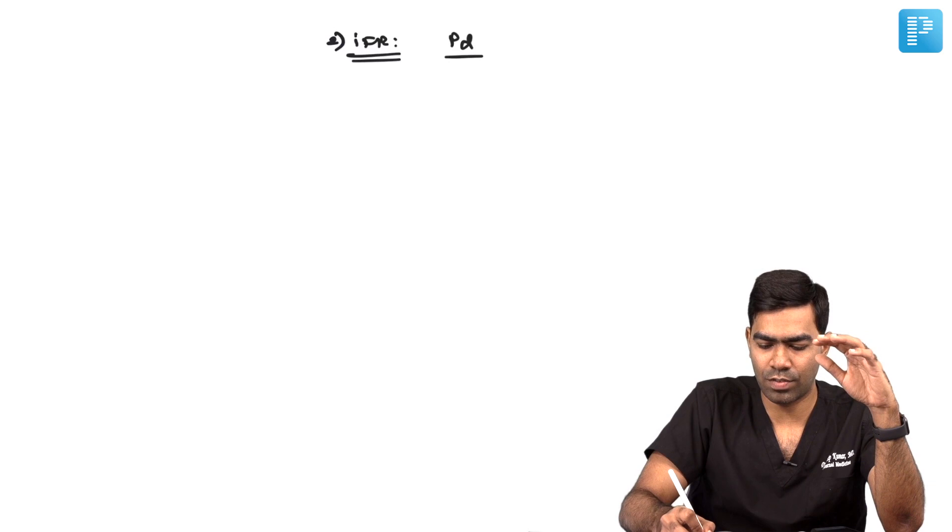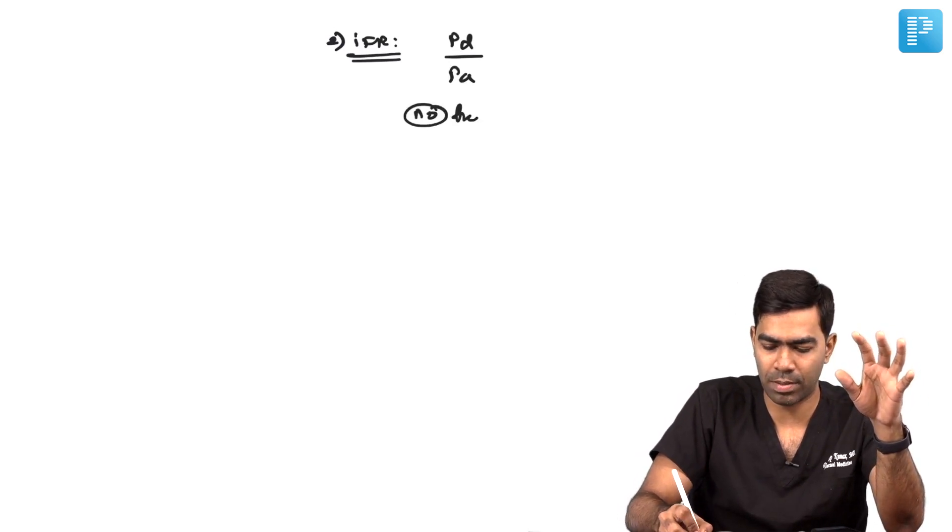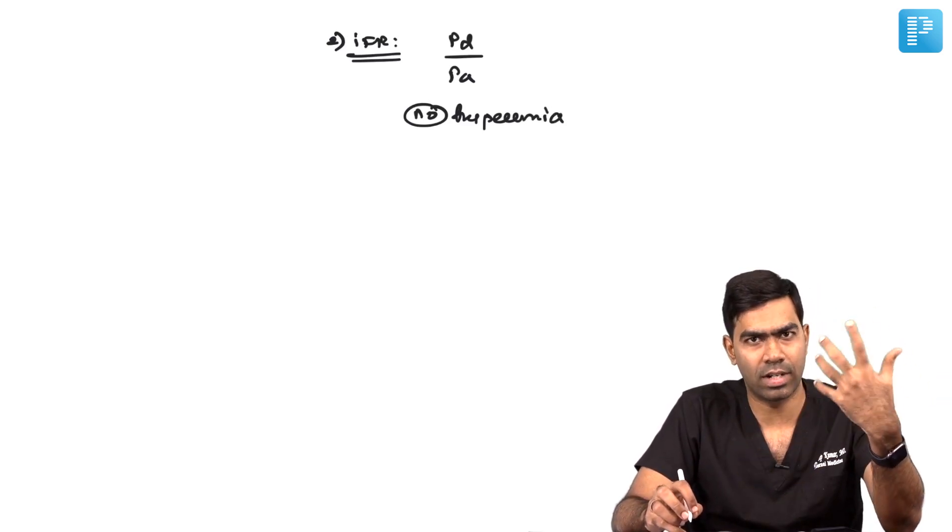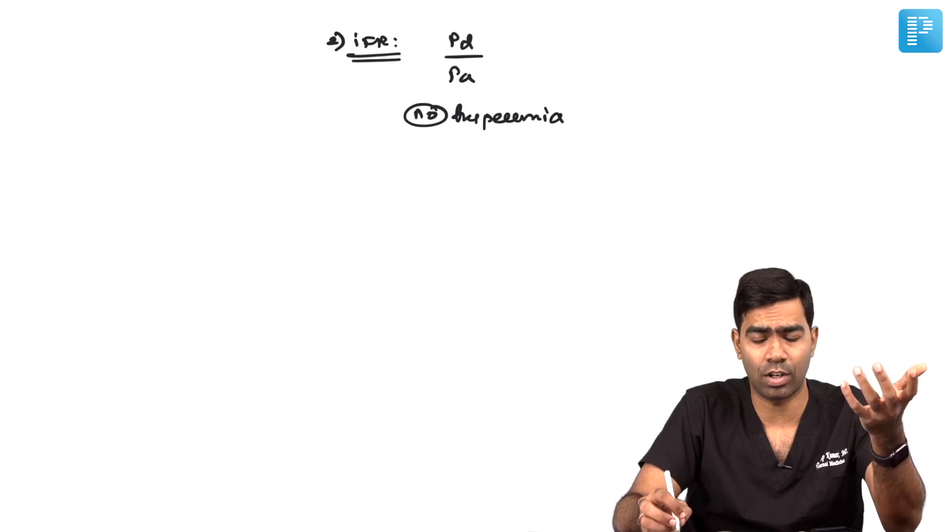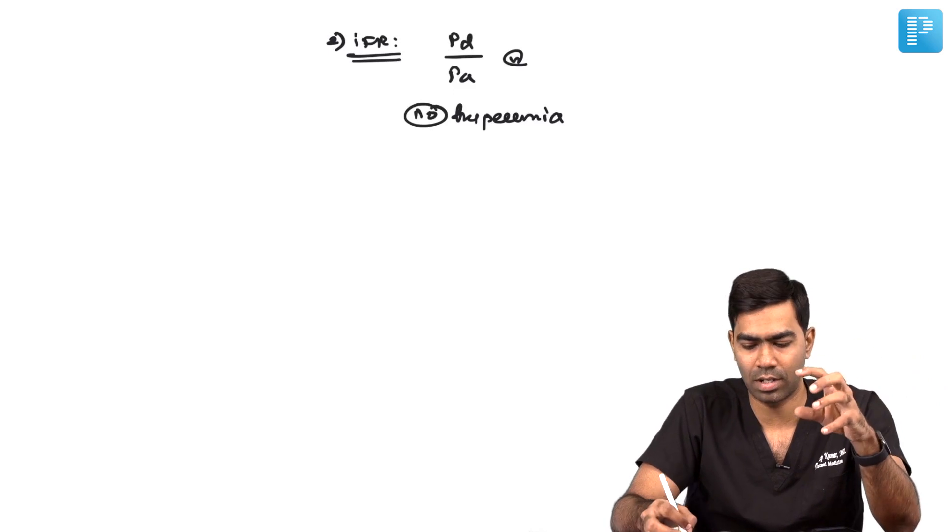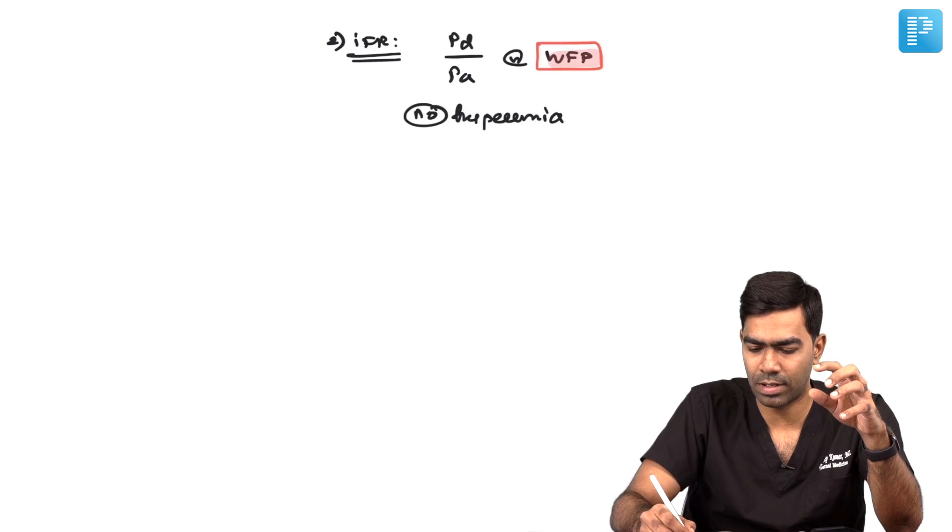With instantaneous wave free ratio, we measure PD/PA without adenosine. How do we determine significance? We measure at a specific point in the pulse waveform called the wave free period.